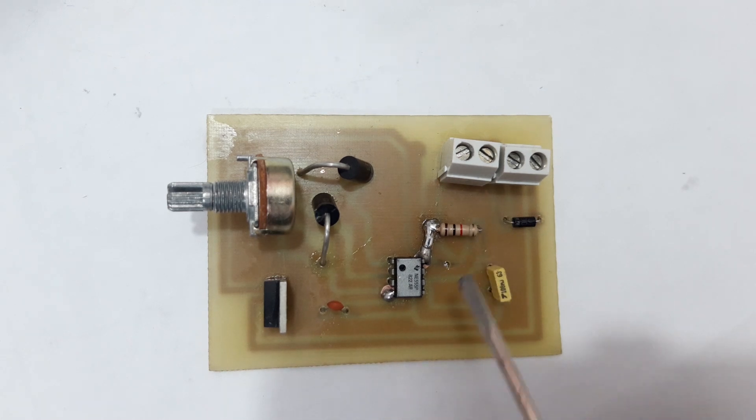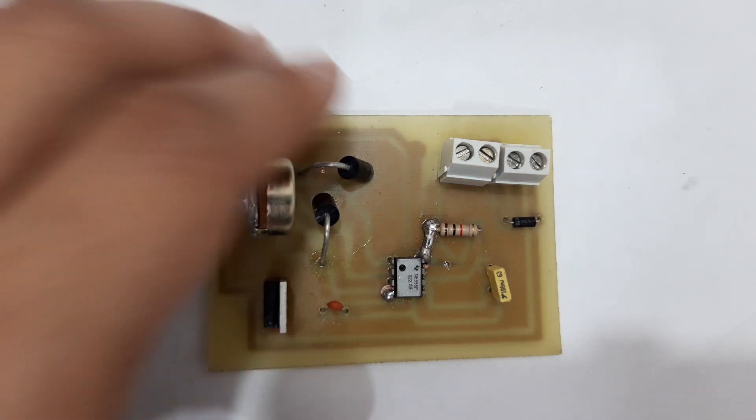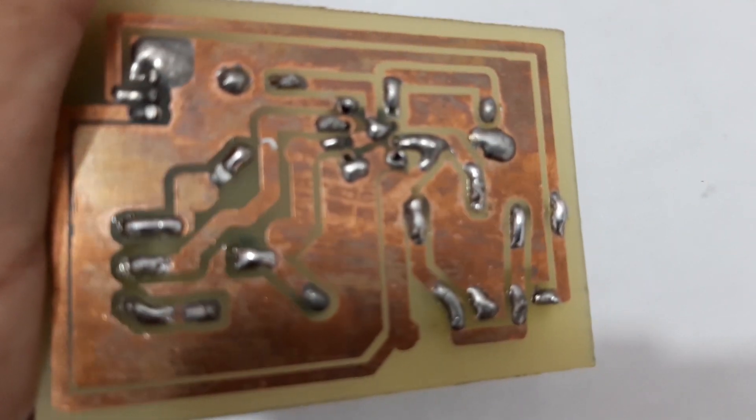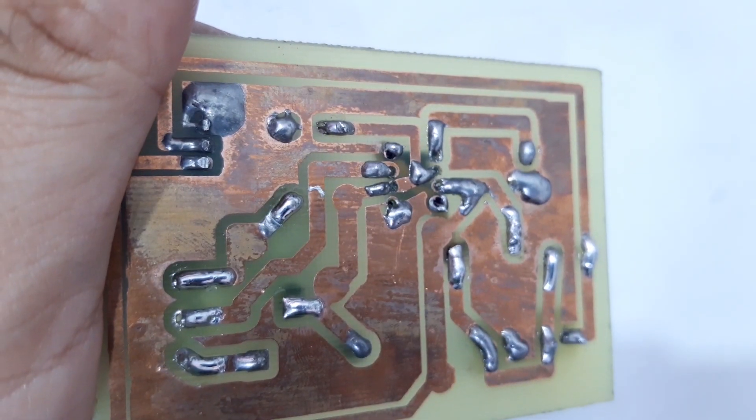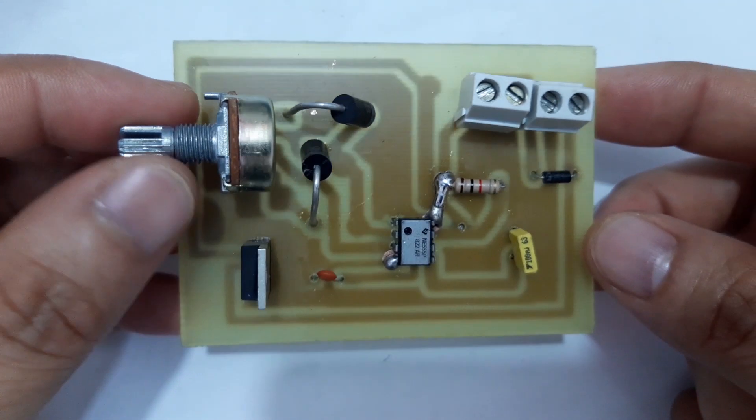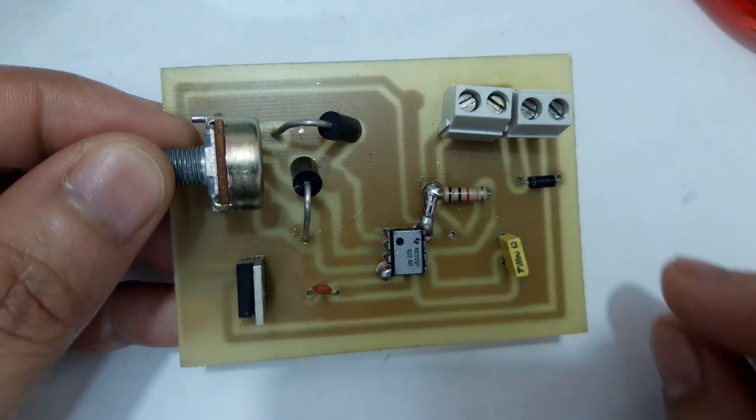And the project didn't work, so I changed this 10K resistor into this one, 1K. So this is the bottom part, and the components here on the other side.